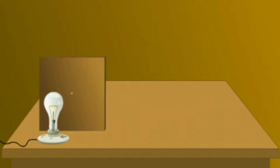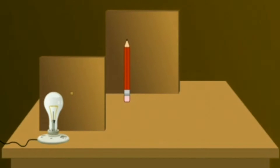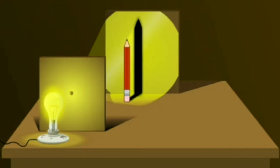For this, take a bulb, a cardboard with a small hole at the center, a pencil and a screen. Why do we have a small hole in the center of a cardboard? Because a bulb is pretty big and it is not a point source. So, we allow light to pass through a small hole so that it acts as a point source.